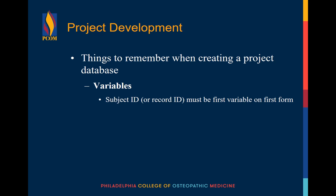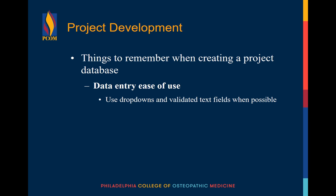There are a few useful tips to remember when creating your project database. First, the subject or record ID must be the first variable on the first form, and this ID is unique to each record. Second, variable names can only contain lowercase letters, numbers, and underscores — you can't use spaces in these fields. To make data entry as easy and clean as possible, use drop-down menus and validated text fields, as this will save time because you won't need to look up a value or spelling. You can also use field notes to indicate required units or formats.